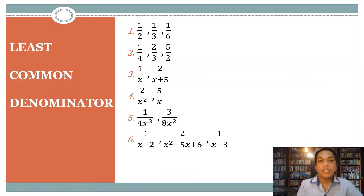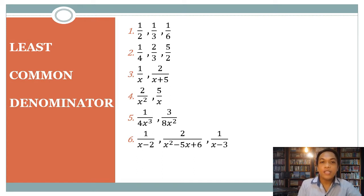Before we proceed, let us recall the least common denominator, or LCD. This is the lowest value or expression that each term in the denominator can divide.